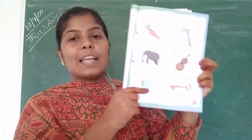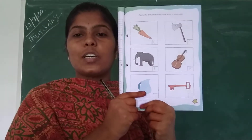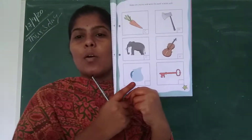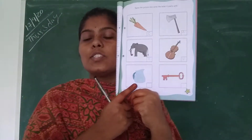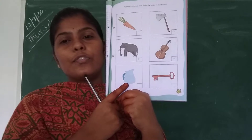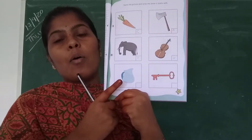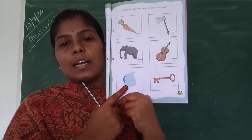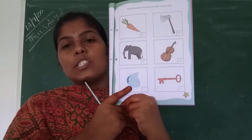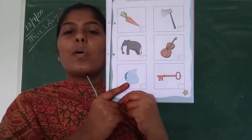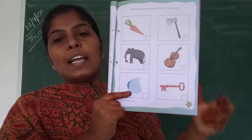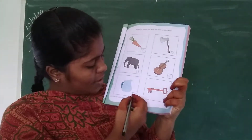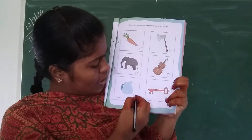See this picture. What is this picture? It is a jug. It is a water jug. It is used to fill the water. So what is the spelling of jug? Jug, J-U-G. What is the starting letter of jug? J. Write J here.